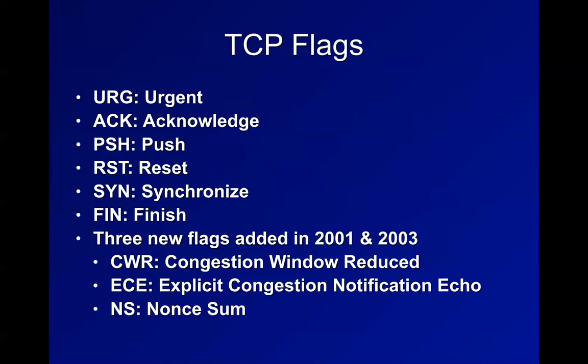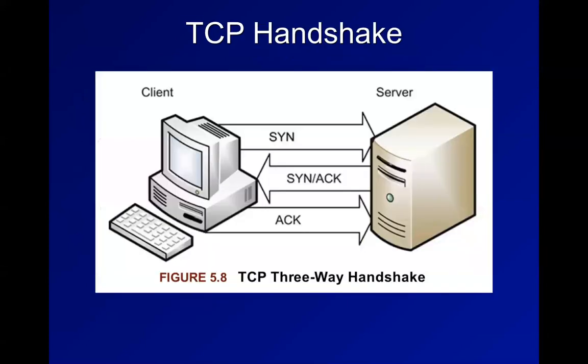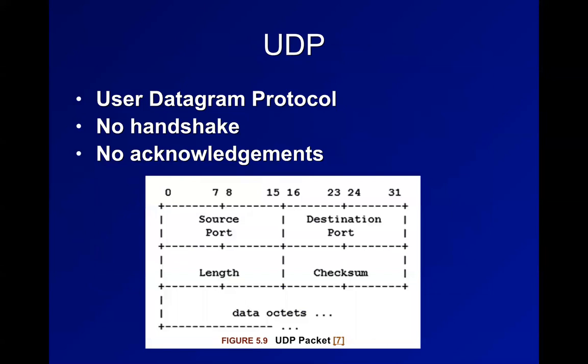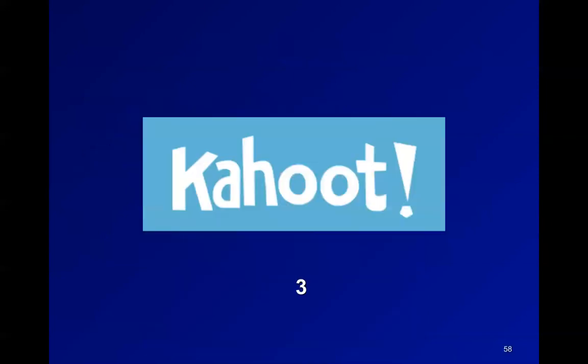There's SYN, ACK, FIN, RESET, and more exotic ones like congestion window reduced that are hardly ever used. UDP has no handshakes, no data acknowledgements, no flow control. You just spray data out like broadcast TV with no information about whether anybody is receiving it. It's fast, but you don't know if the data got there. It's called unreliable - not that it fails a lot, but that you have no receipt to prove it arrived.